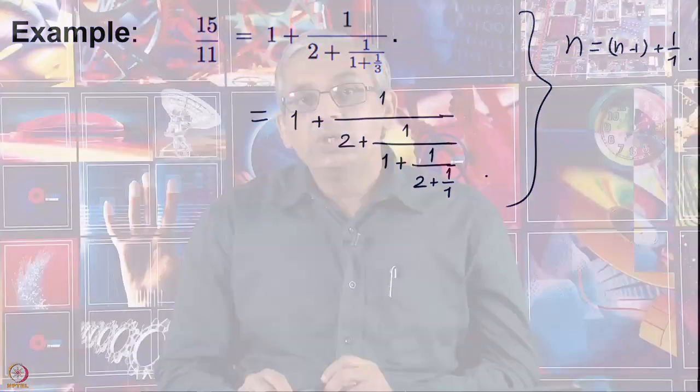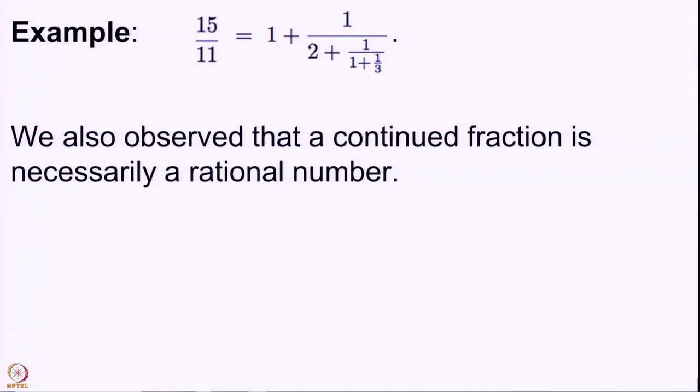Before saying all these things, we should also give a way to construct a continued fraction representation for a rational number. We will do all these things as and when the time comes. But we also noticed that if you have a continued fraction then it is necessarily a rational number, because the continued fraction is obtained starting with an integer a_0, then a_1, a_2, up to a_n — only finite data. We observed in the last lecture that this is necessarily a rational number. Let us see the proof once again.